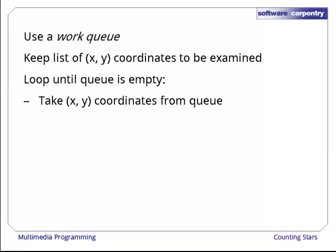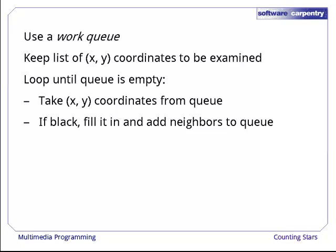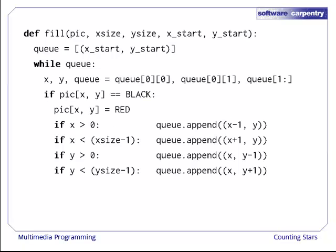On each pass through the loop, it takes the xy coordinates of a pixel from the queue, and if that pixel is black, fill colors it red and adds its neighbors to the queue. Here's what the function looks like.